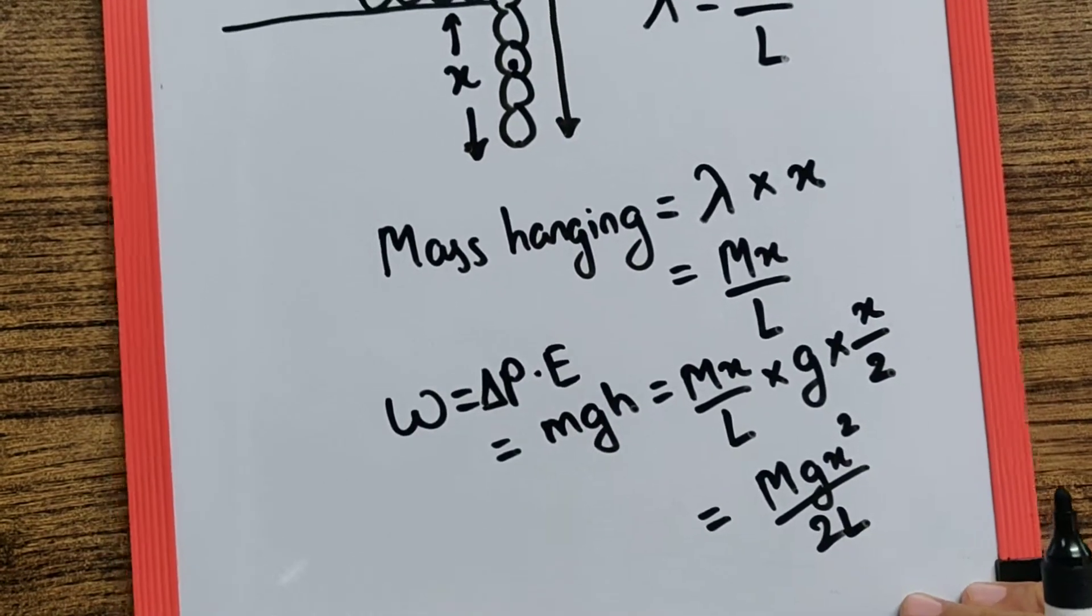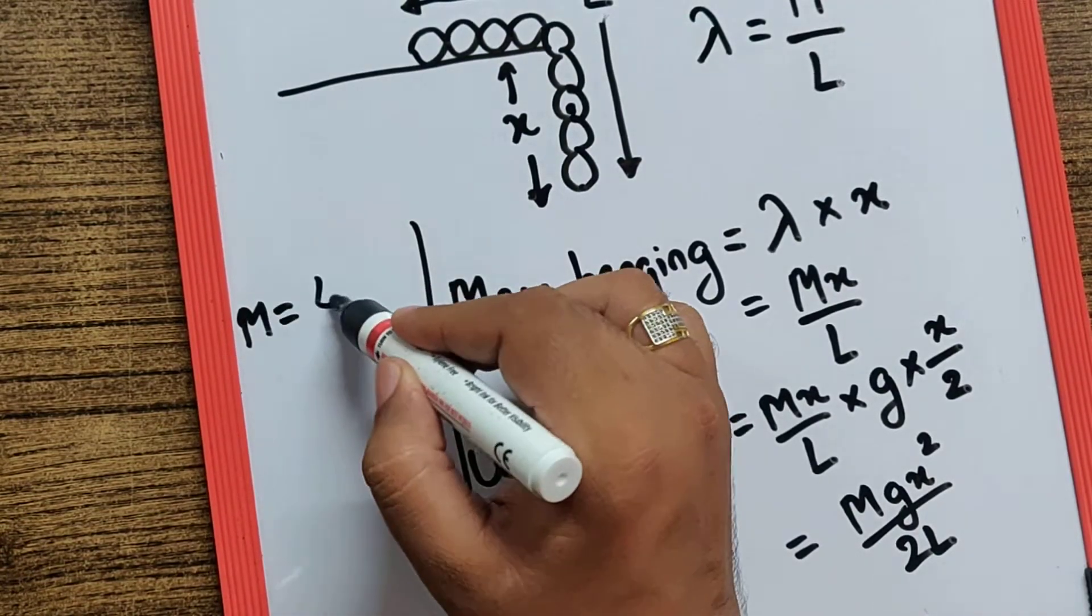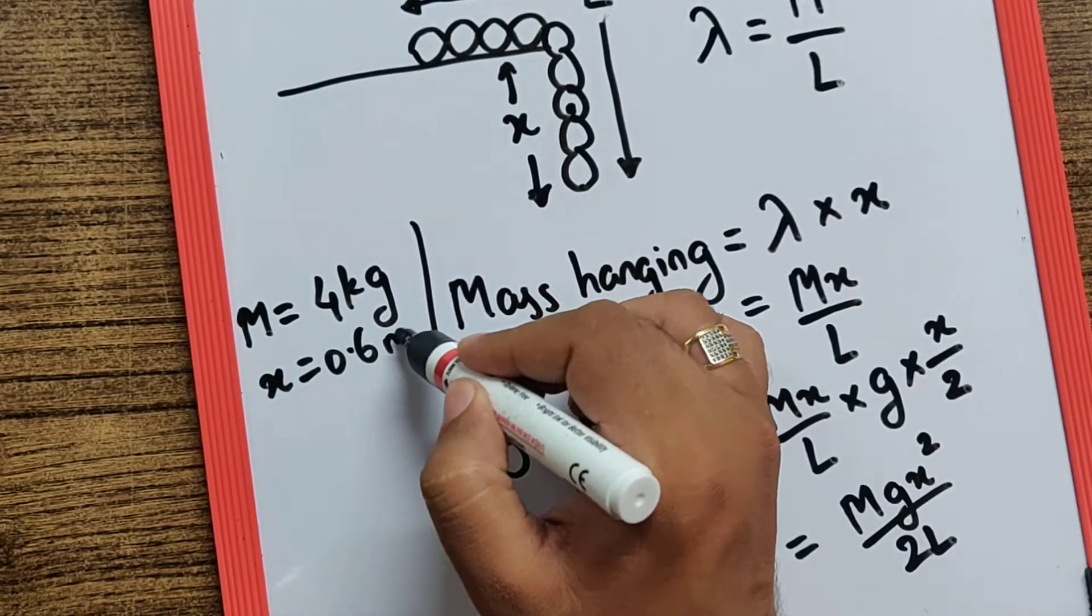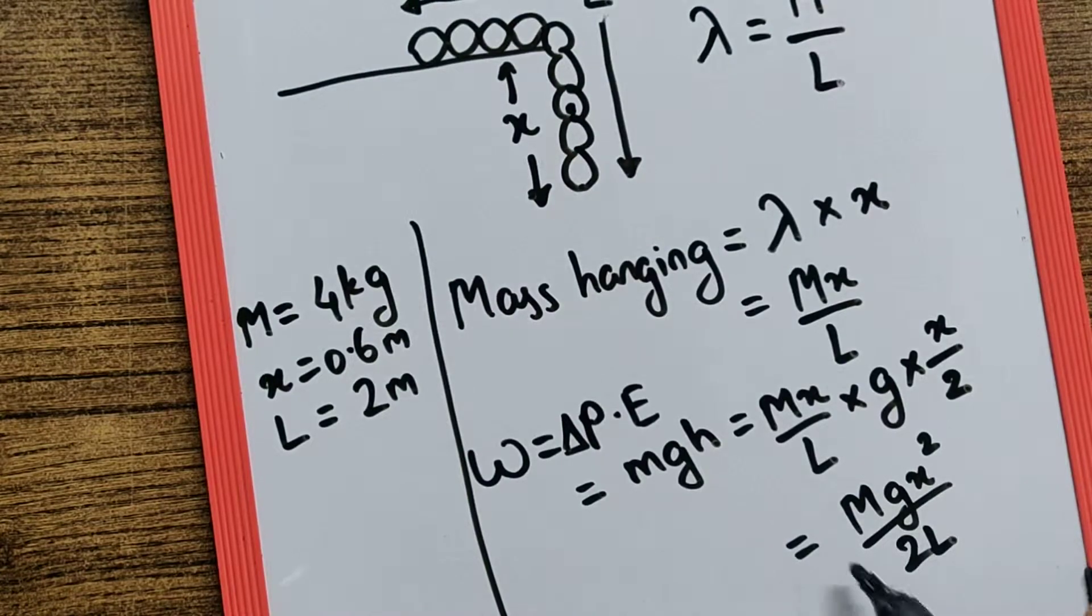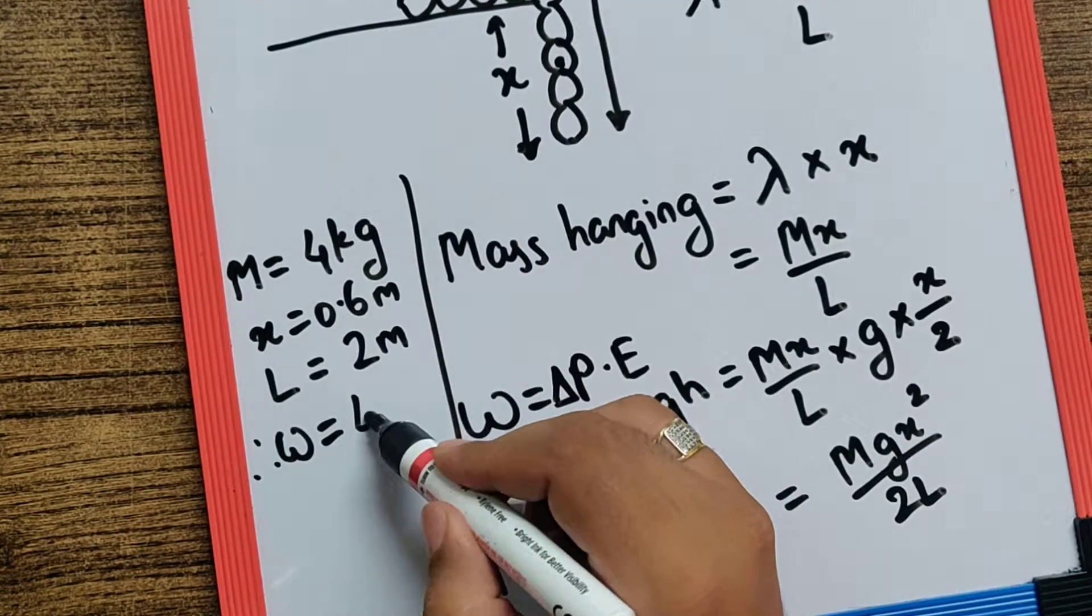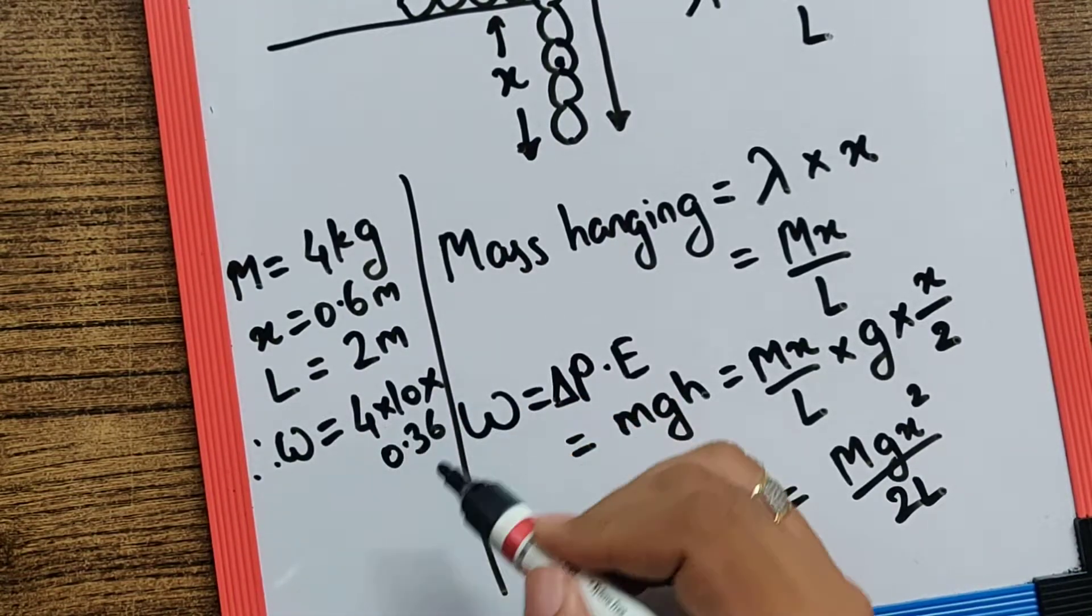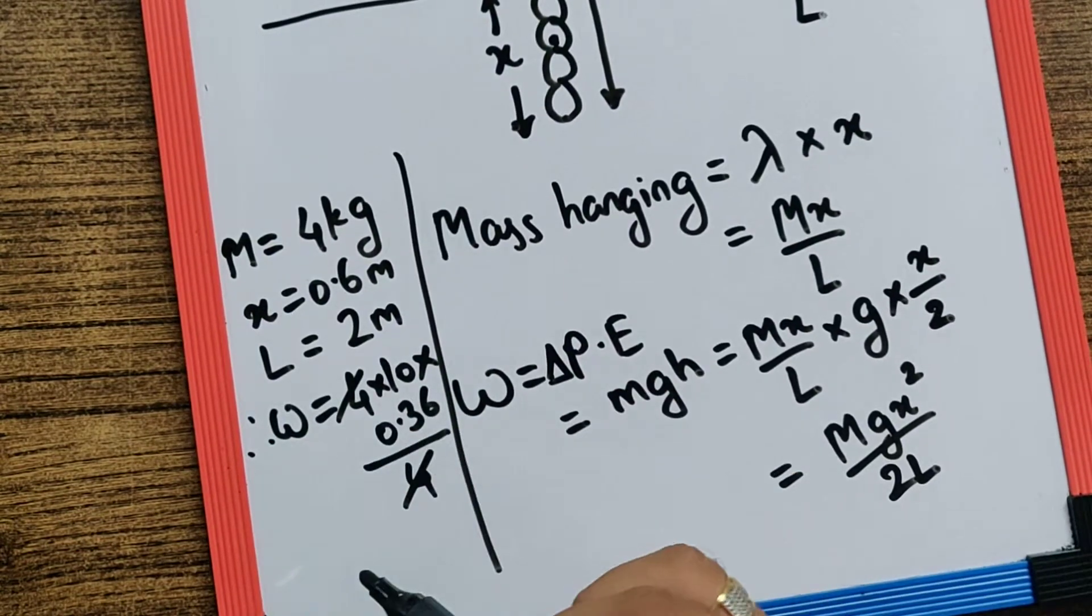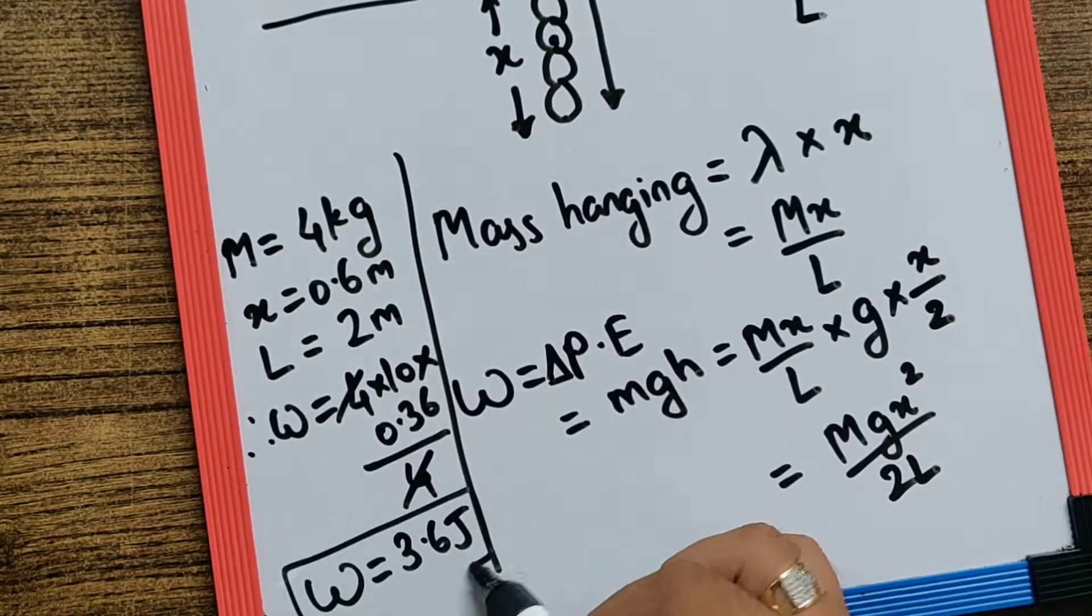Now in this particular equation M is given as 4 kg, X which is hanging is 0.6 meter, and L which is the total length of the wire is 2 meter. So when we substitute it over here we get the work as 4 into G is 10 into X square that is 0.6 square which is 0.36 upon 2L that is 2 into 2, 4. So this gets cancelled and you get the final work done as 3.6 J which becomes your final answer.